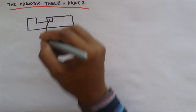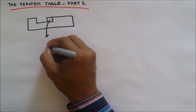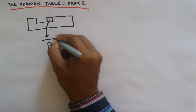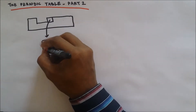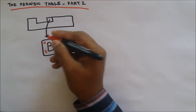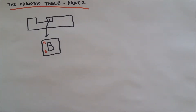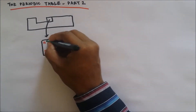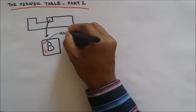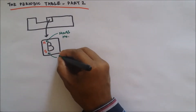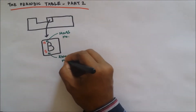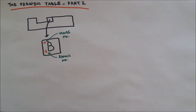If we take a periodic table and take the element boron, if you notice the periodic table there is a top number and a bottom number for boron. The top number is 11 and the bottom number is 5. The top number is called the mass number and the bottom number is the atomic number.